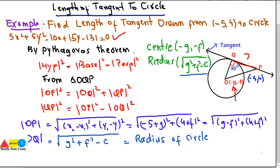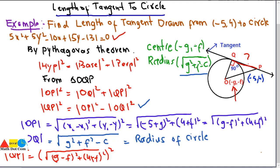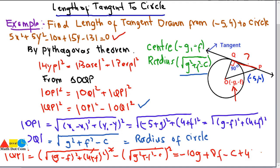Now we put OP and OQ into the formula. QP² = OP² - OQ², which gives: QP² = [(-5 + g)² + (4 + f)²] - [√(g² + f² - c)]². The square cancels with the square root, and after simplification we get: QP² = -10g + 8f - c + 41.